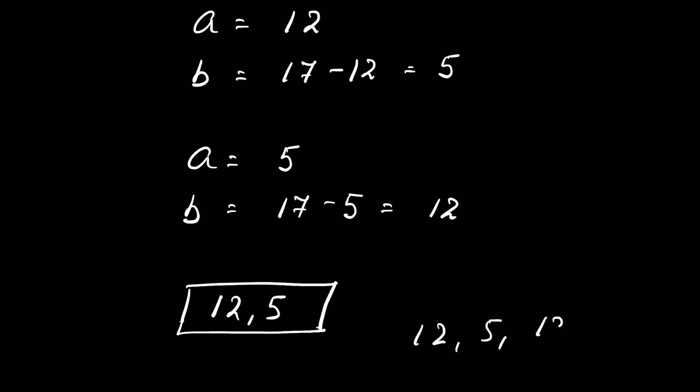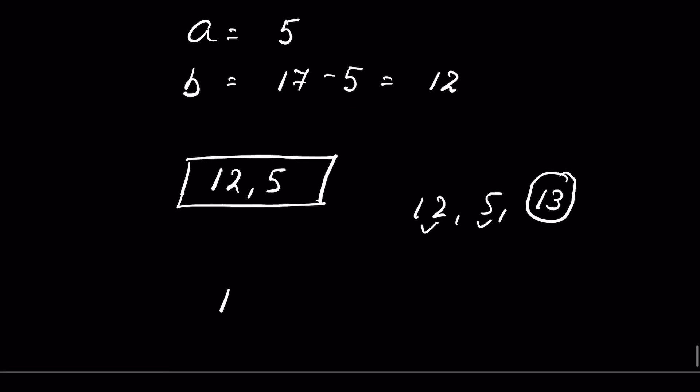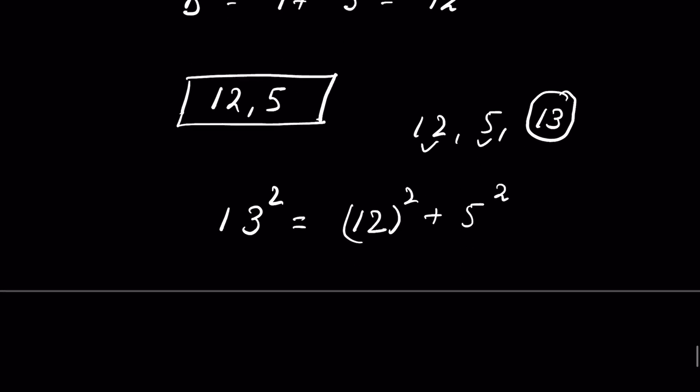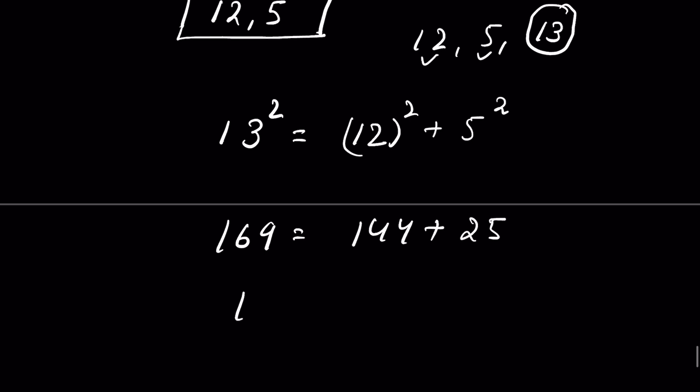We need to check whether the square of the hypotenuse equals the sum of squares of the other two sides: 13² = 12² + 5². This equation should be satisfied. 13² = 169, 12² = 144, 5² = 25, and 144 + 25 = 169. LHS equals RHS.